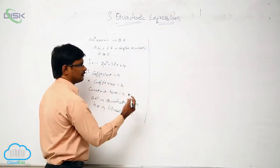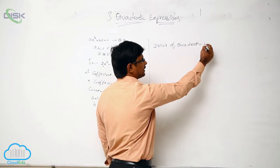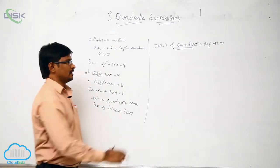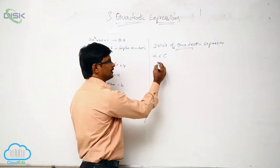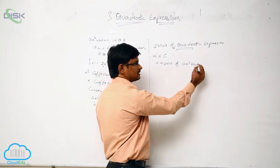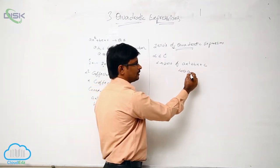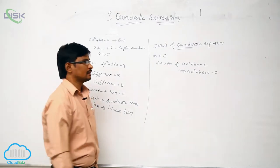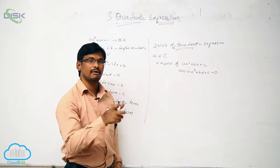What are the zeros of a quadratic expression? Let alpha be a complex number. Alpha is said to be a zero of the quadratic expression Ax squared plus Bx plus C if A·alpha squared plus B·alpha plus C equals 0.